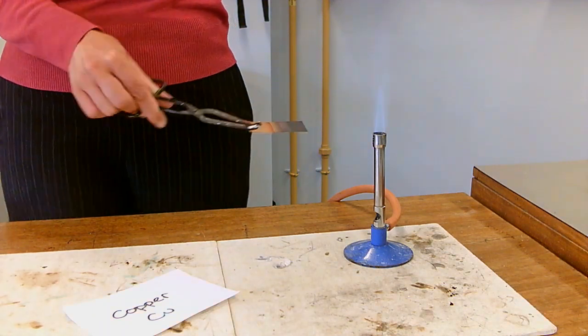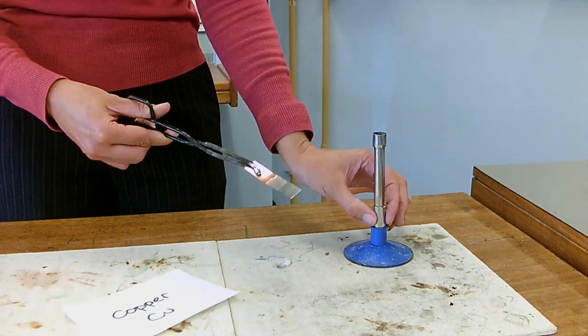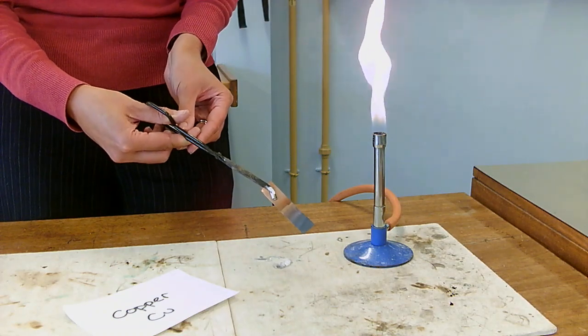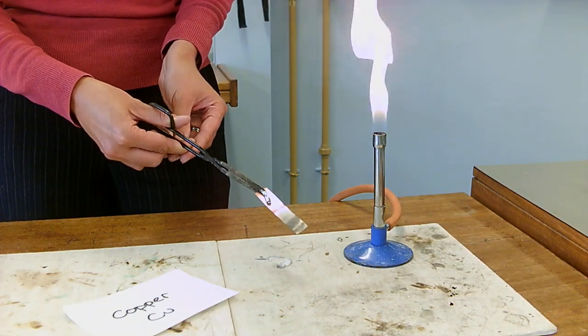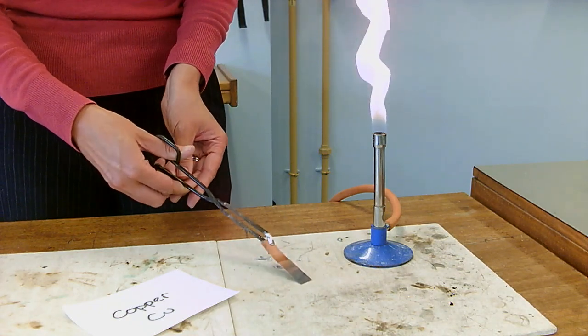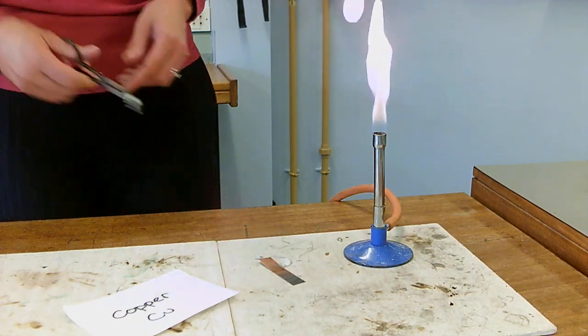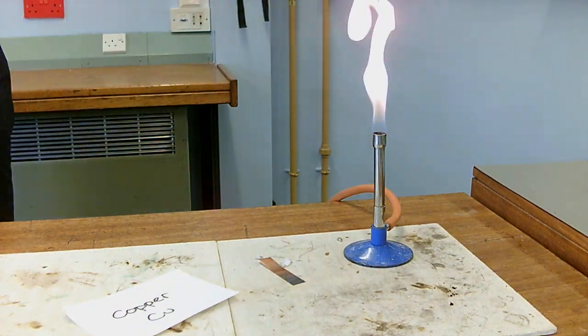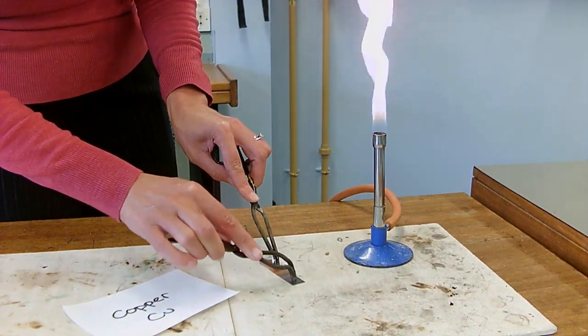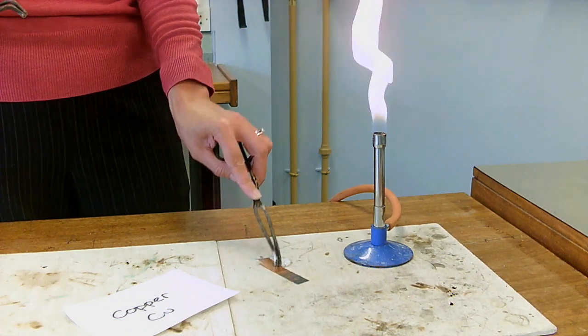So, take it out, see, instead of being copper color it has gone this sort of gray color in the end where I put it in the flame. But that's only affected the outside edge. I can scrape that bit off and I can get to the copper again underneath.